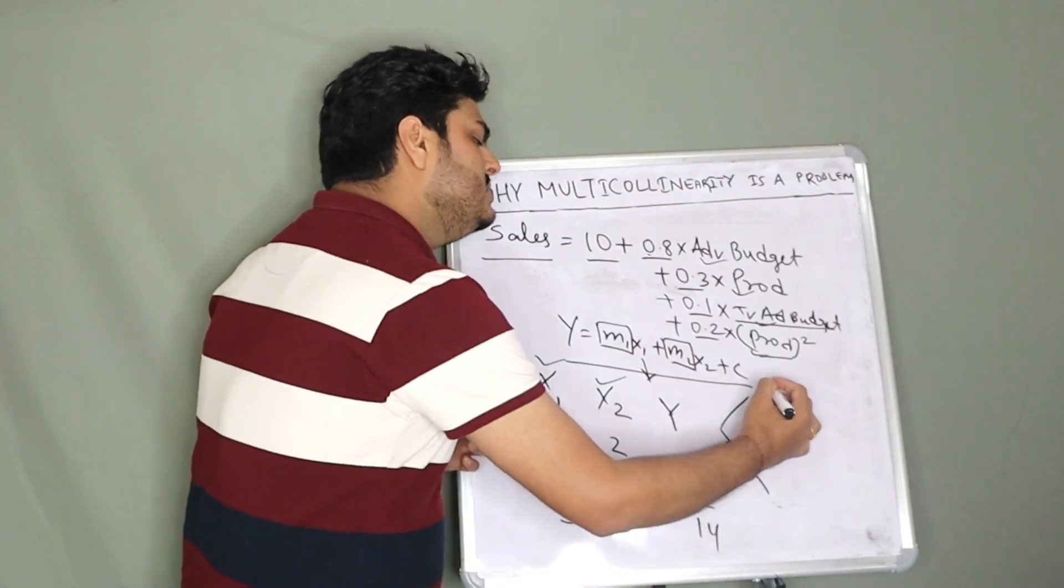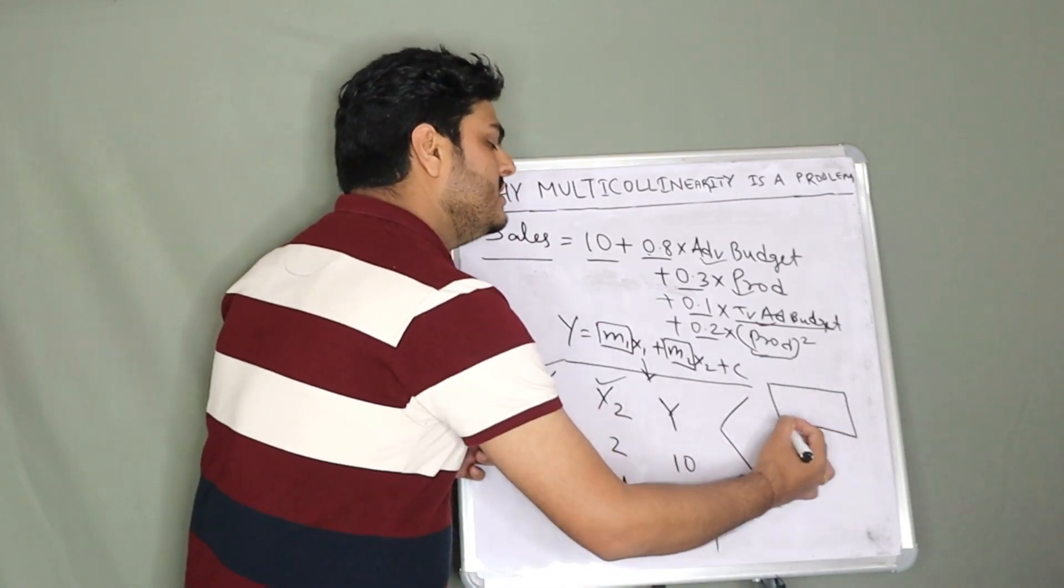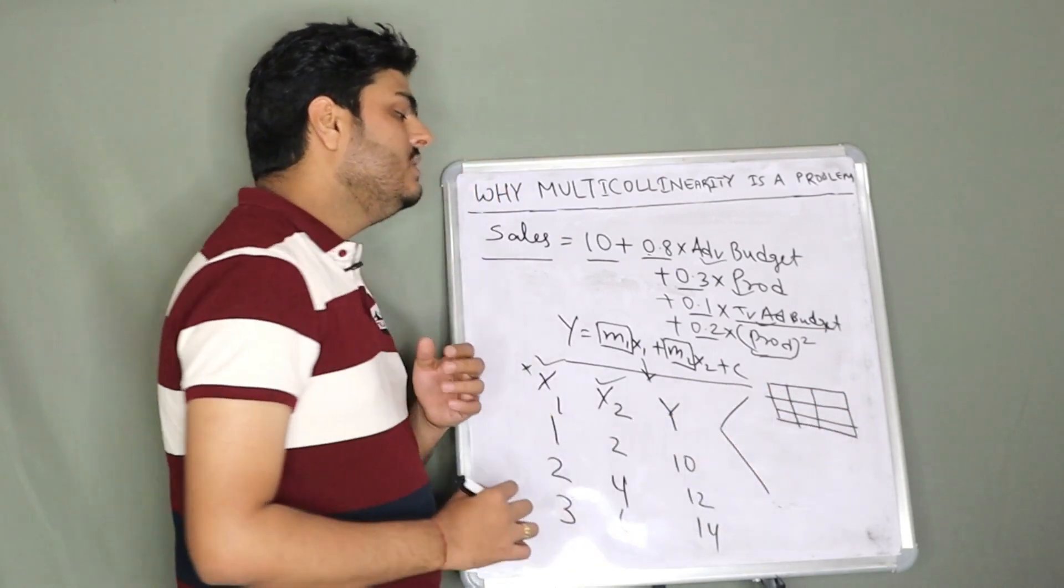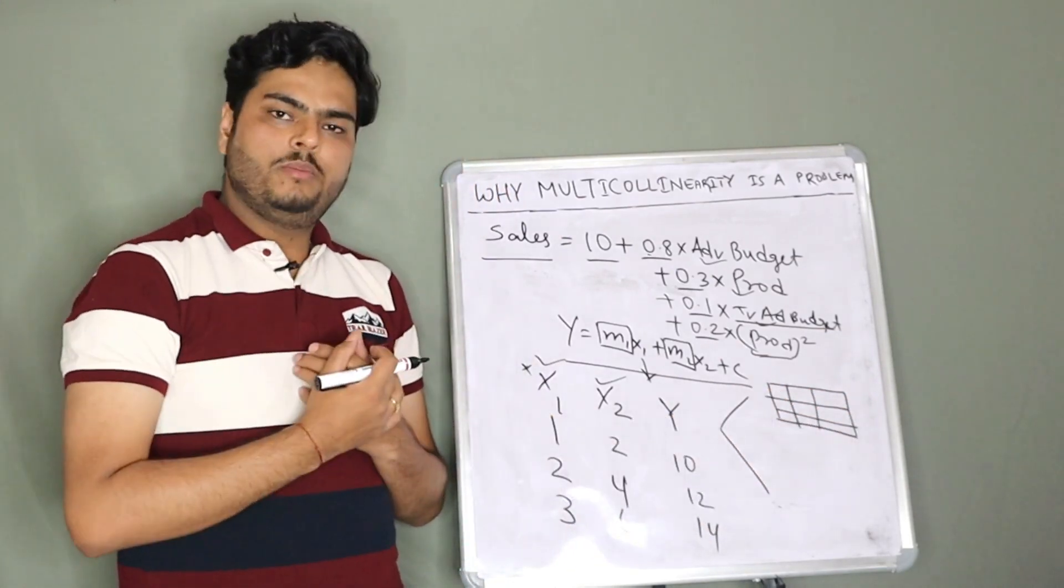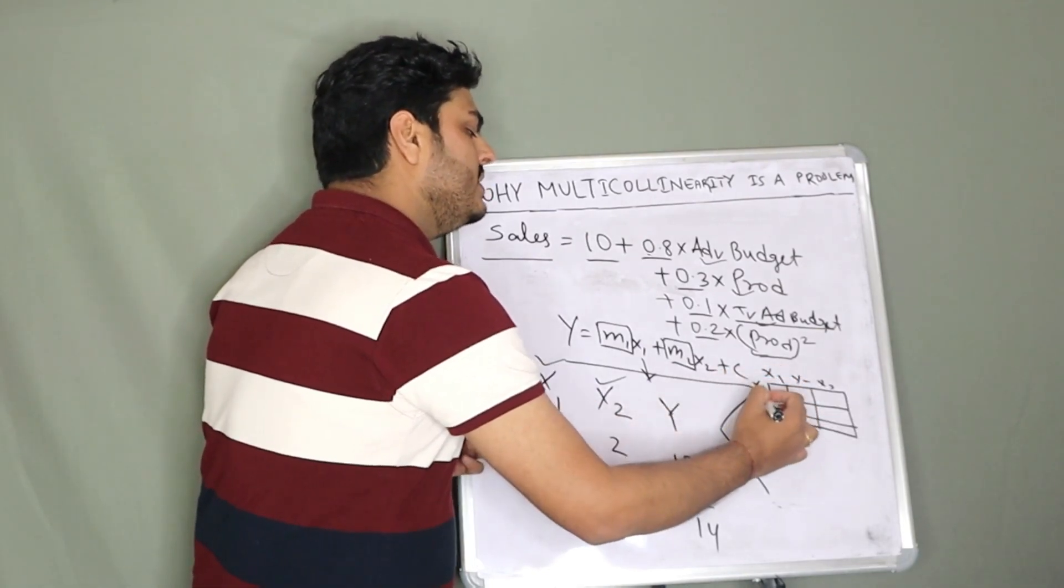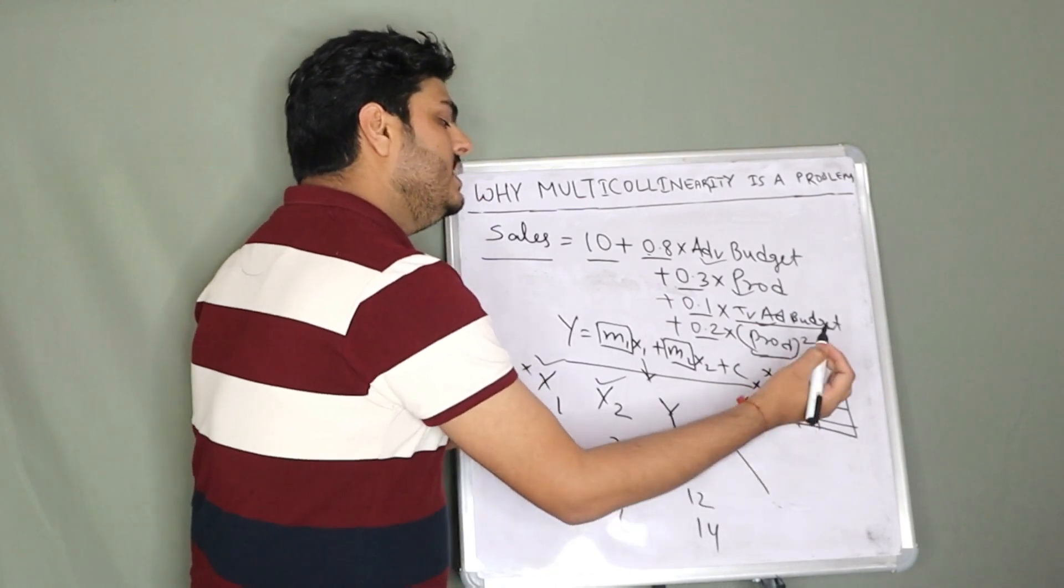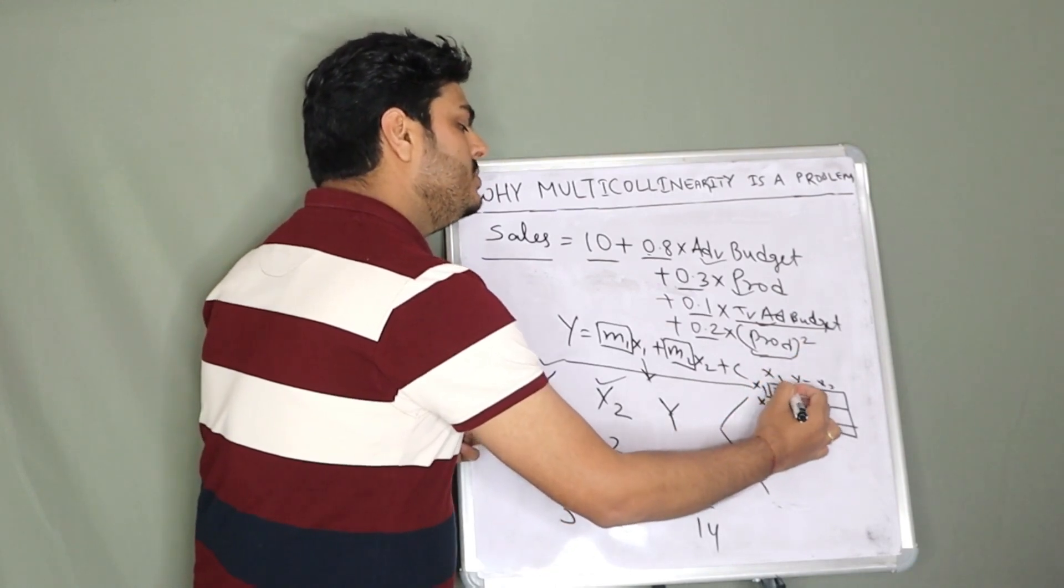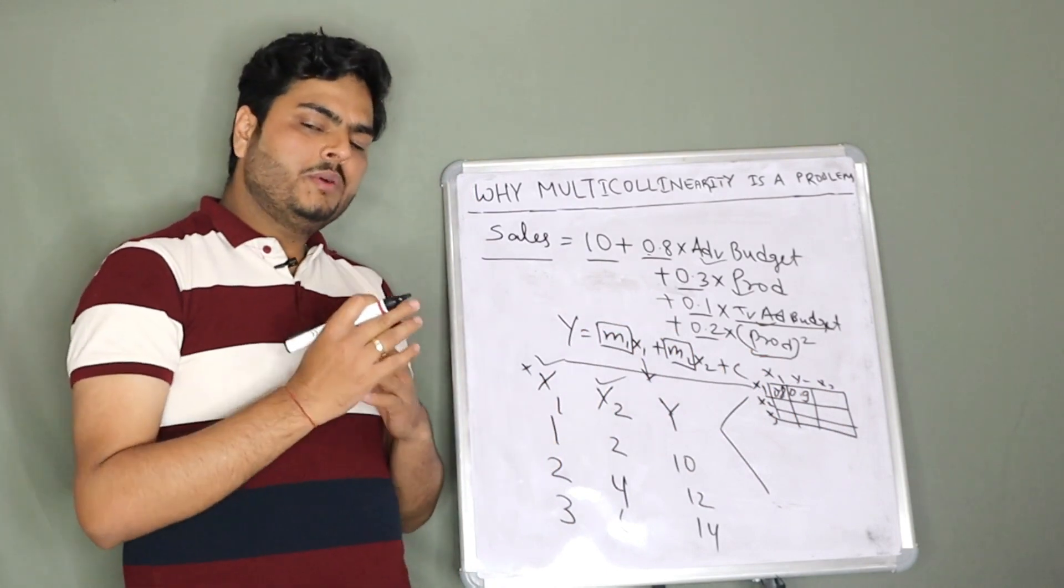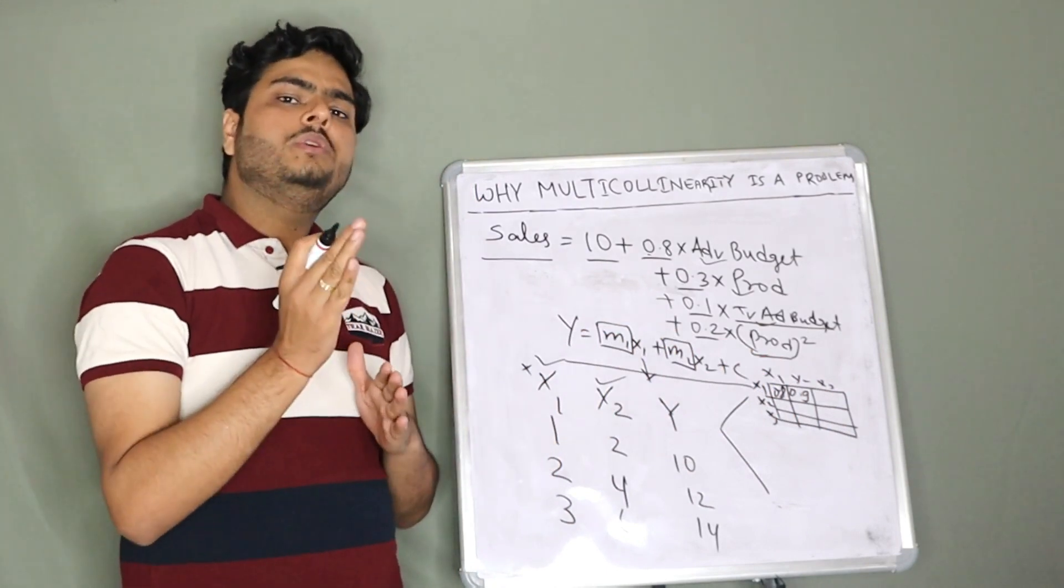What you can do is create a correlation matrix. The correlation matrix will give you all your variables' correlation value with other variables. For example, x1, x2, x3, here you can have x1, x2, x3, correct? It will show you 0.8, 0.9.